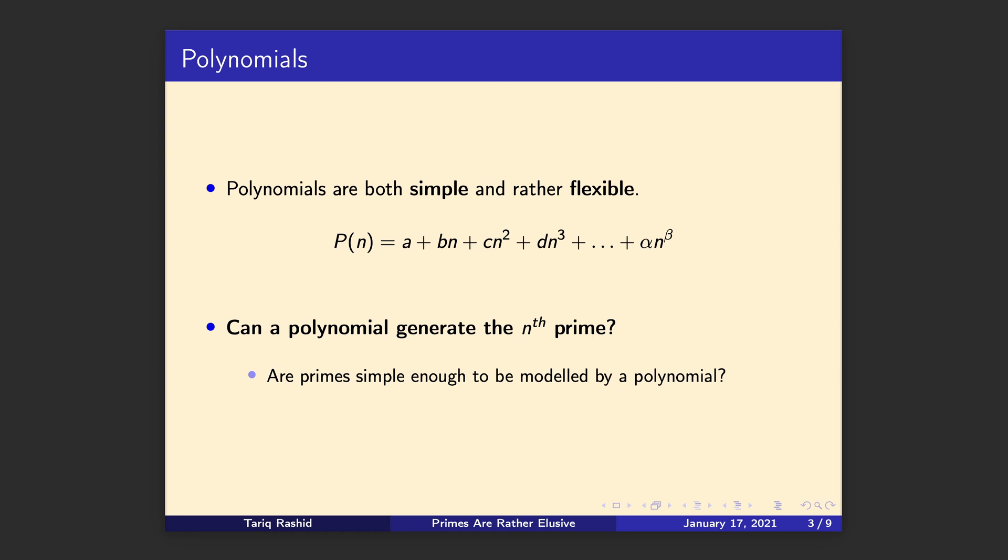Now when we say simple formula, we haven't really defined what that means. One way of defining that, constraining the problem, is to say, is there a polynomial that can generate the nth prime? Now why polynomials? Well, they're simple, but they are also rather flexible. It's almost a sweet spot because if we limit the kinds of formulas we can talk about too much, then we might find that we can't generate interesting sequences with them. If we widen out our definition too broadly, then the question becomes much harder and probably beyond me in terms of being able to answer it.